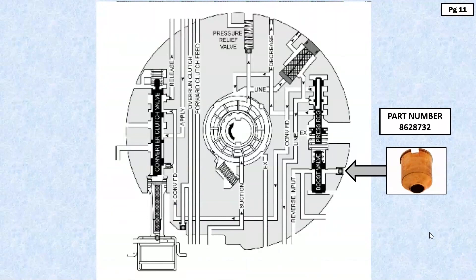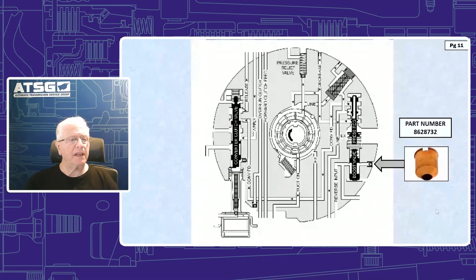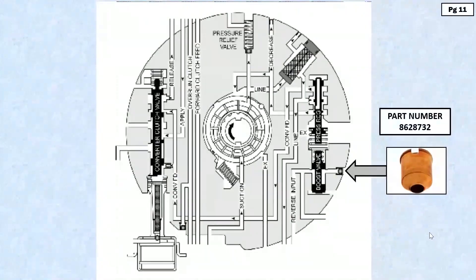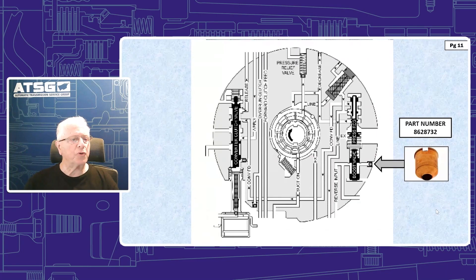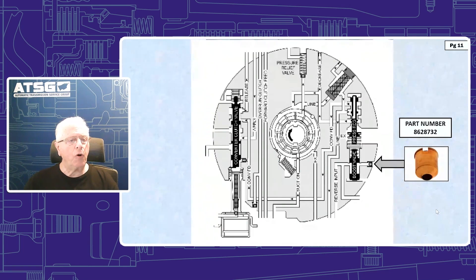Now you need to jot down that part number you see there because believe it or not, I did find it for this little capsule and it's 8628732. However, if you try to get this through OE sources and they tell you it's no longer available, it is available through aftermarket sources. I've seen it on eBay, I've seen it on Amazon. Cobra transmission parts also carries a version of this. So in the event the OE don't come through, you have an alternative.